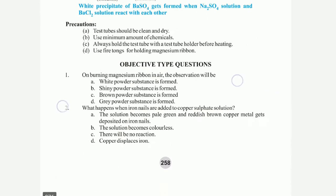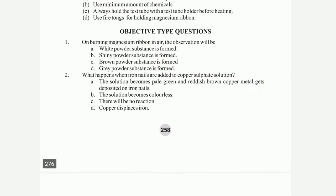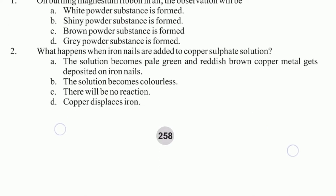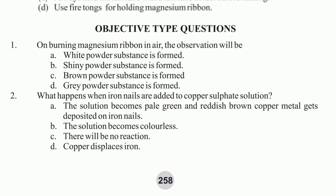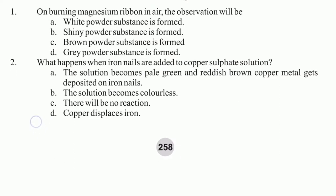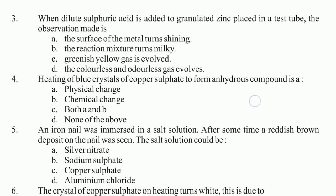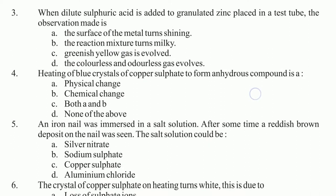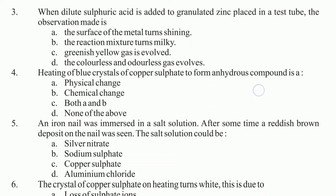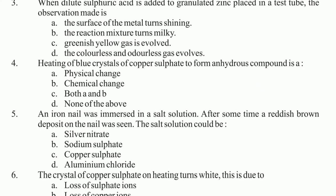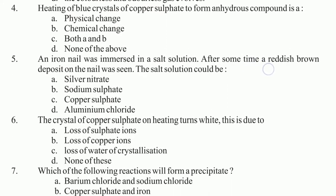Objective type questions: question 1 — burning magnesium ribbon, the observation will be? Question 2 — what happens when iron nails are added to copper sulfate solution? Question 3 — when dilute sulfuric acid is added to zinc placed in a test tube, the observation made is — choose from options ABCD.